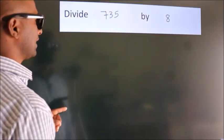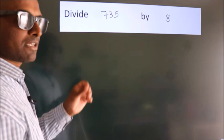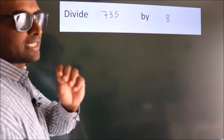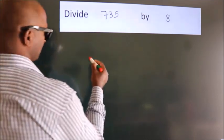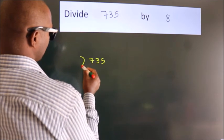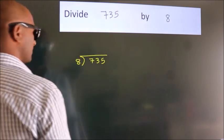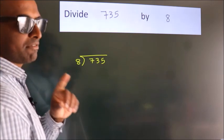Divide 735 by 8. To do this division, we should frame it in this way. 735 here, 8 here. This is your step 1.